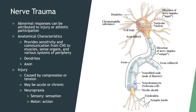Nerve injuries typically occur as either compression or tension, and may be acute or chronic. Neuropraxia is the interruption in conduction through nerve fibers, brought about via compression or blunt trauma. The most common impact involves motor more than sensory function, resulting in a temporary loss of function. Pain can also be referred from neurological injuries.